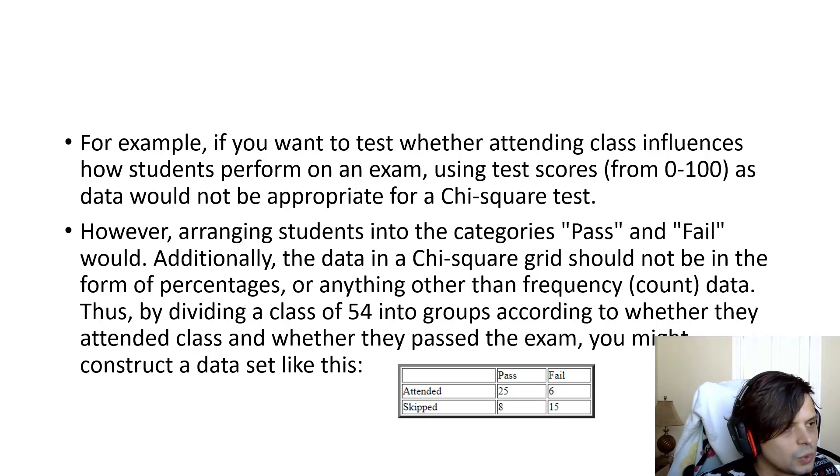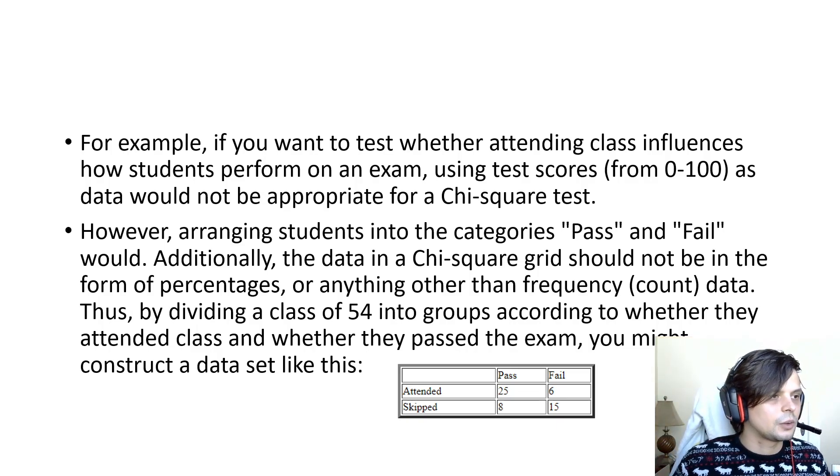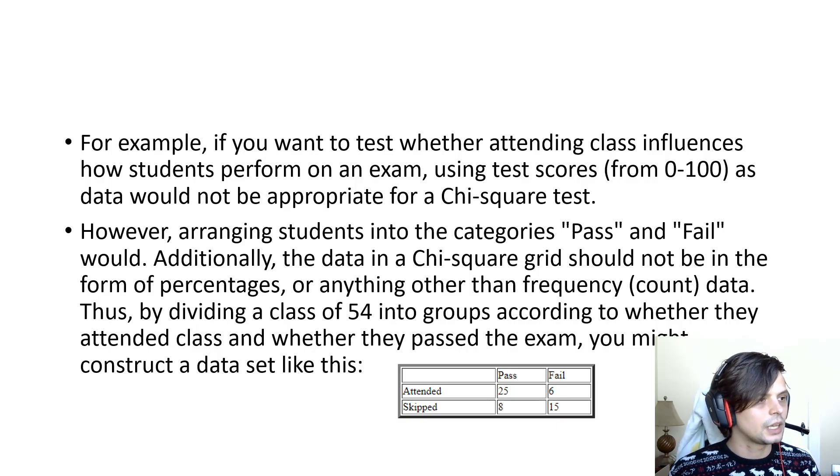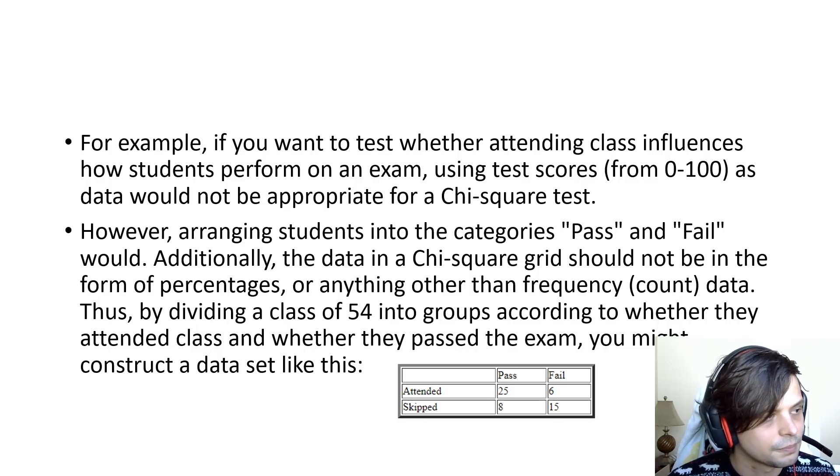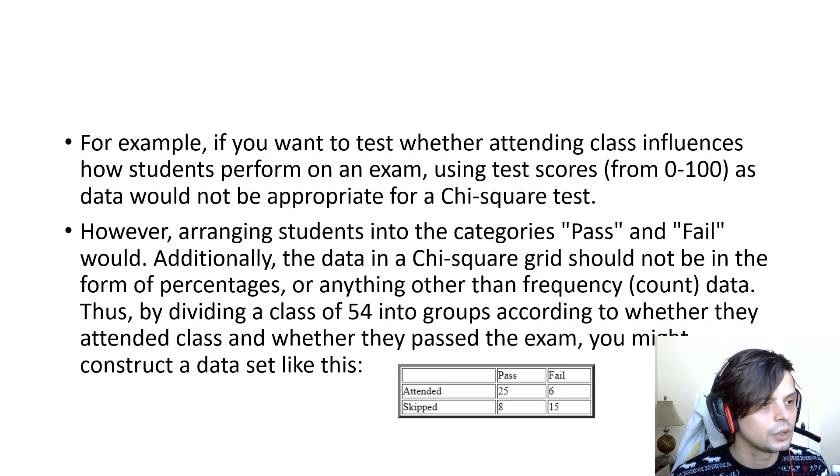For example, if you want to test whether attending class influences how students perform on an exam using test scores from 0 to 100, that data would not be appropriate for chi-square. However, arranging students into a category pass or fail would. Additionally, the data in a chi-square grid should not be in percentages or anything other than frequency. Thus, by dividing a class of 54 students according to whether they attended class and whether they passed the exam, you might construct a data set like this. You see it's yes-no data. Did they attend or did they skip? Pass, fail. So if you attended class, 25 passed and 6 failed. Then if you skipped class, 8 passed and 15 failed. We can already see a pretty decent difference there by observation.